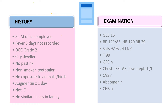This is a 50-year-old patient with fever for three days. He presents with Grade 2 dyspnea — that is mild dyspnea. He lives in the city, works in an office, has no past history of any kind, no exposure to animals or birds, is not immunocompromised, there is no similar illness in the family, and he has taken augmentin — that is amoxiclav — for one day.